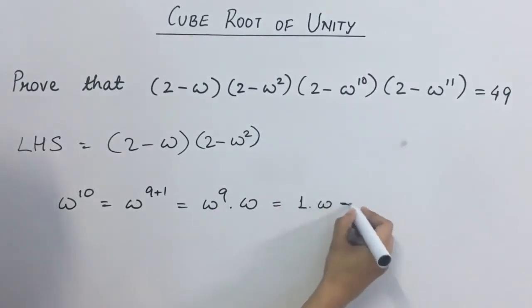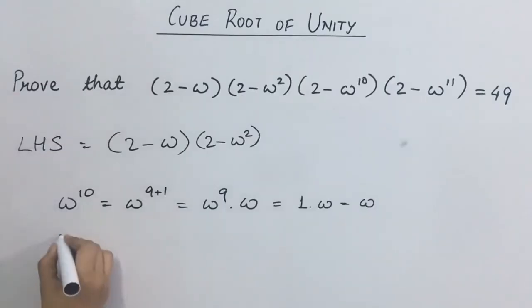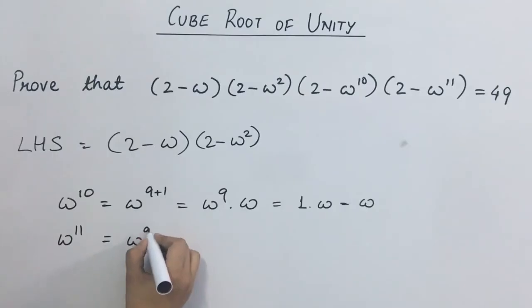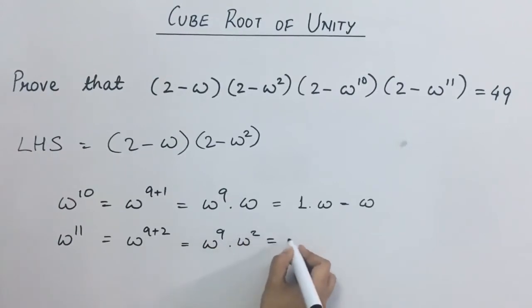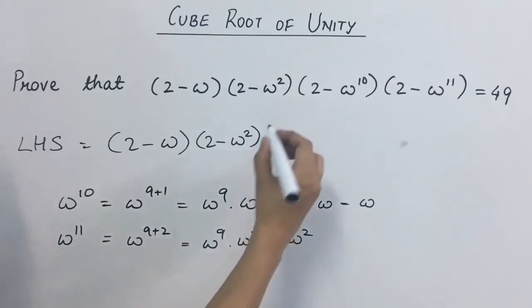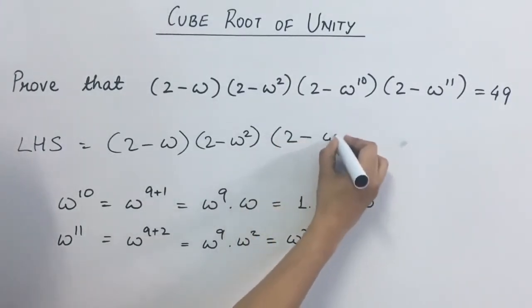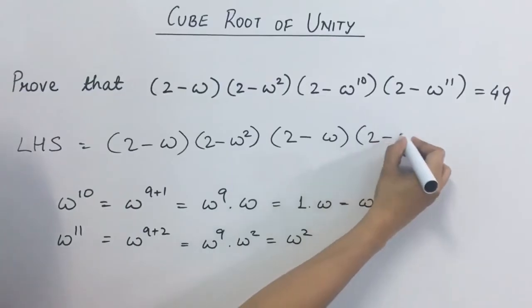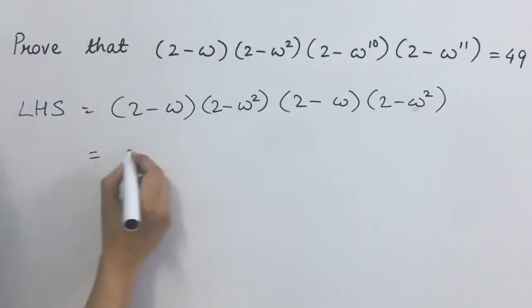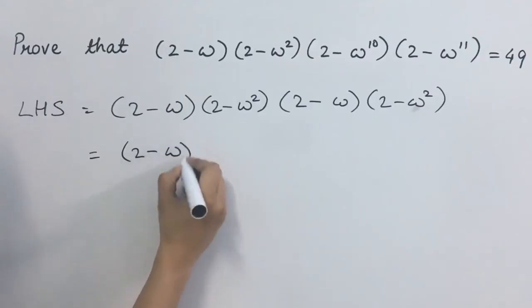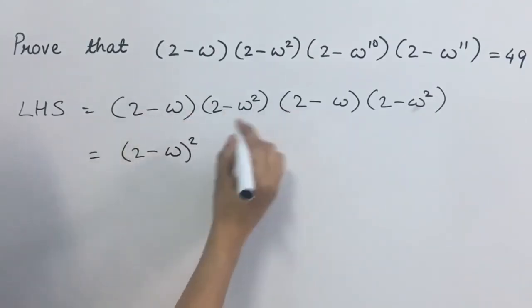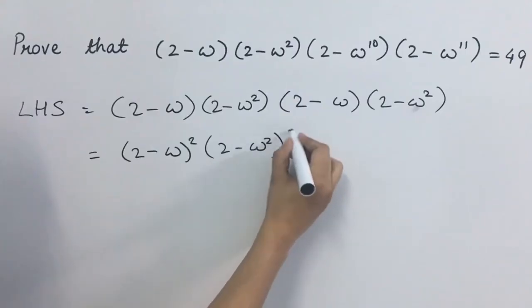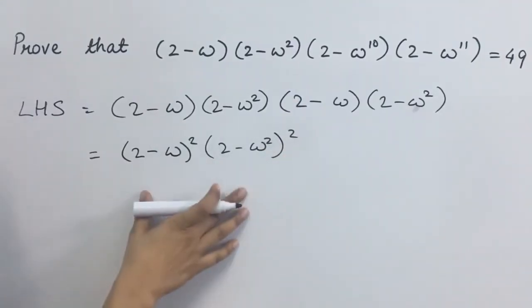So this is a multiple of 3. So this value what will come out to be? Omega itself. So this will come out to be 2 minus omega and 2 minus omega square. What will happen to this? 2 minus omega whole square. This will be repeated two times and 2 minus omega square whole square.